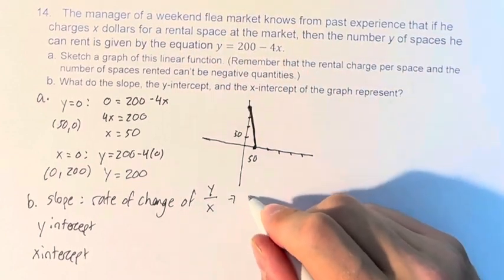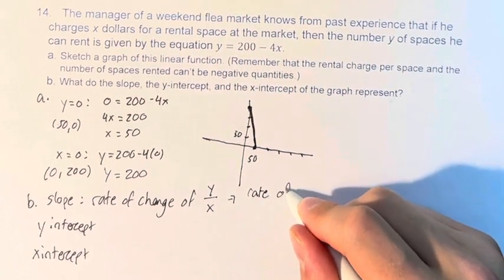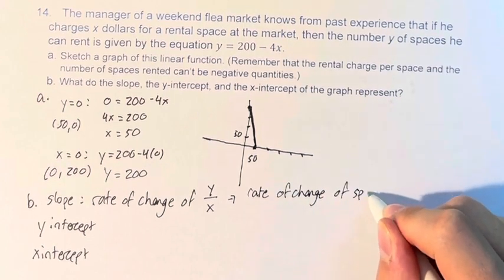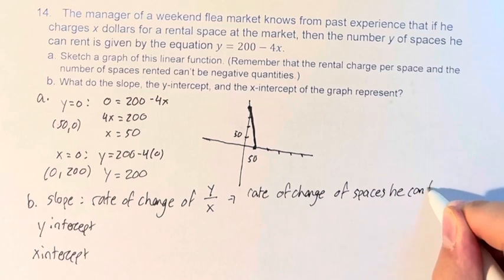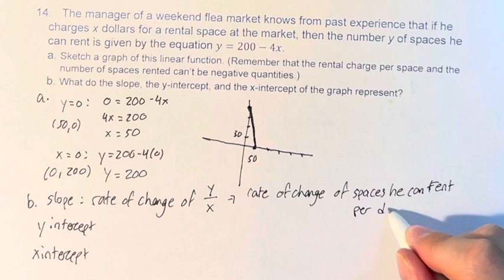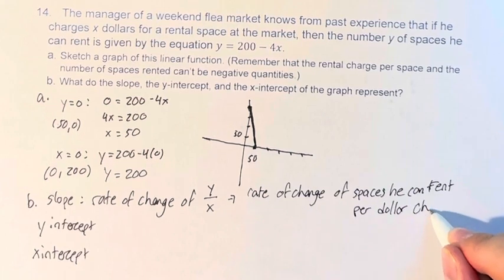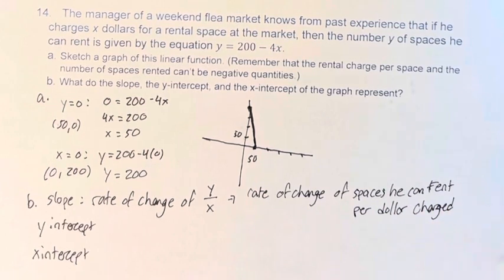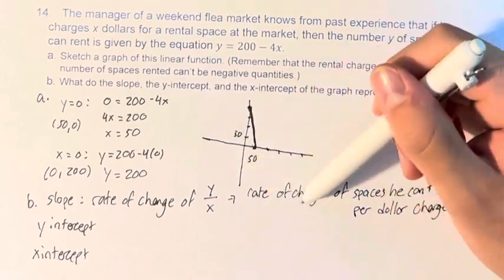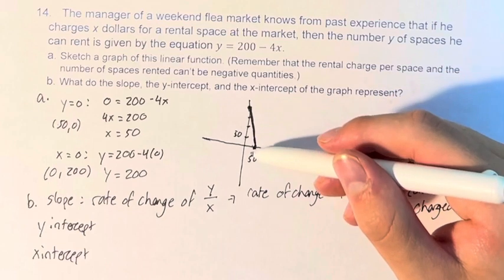So this is the rate of change of spaces he can rent per dollar charged. As he increases, the number goes down. And the rate of change is given by the slope of this graph.